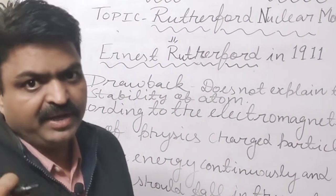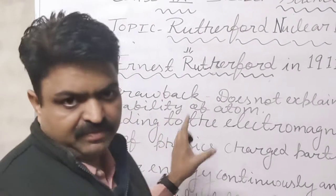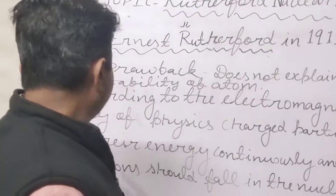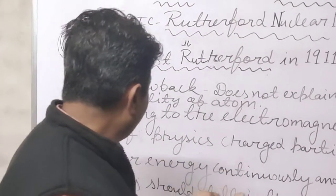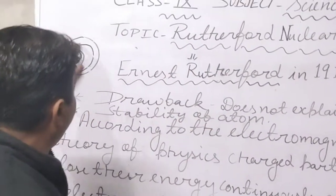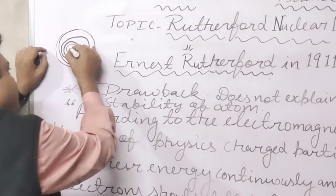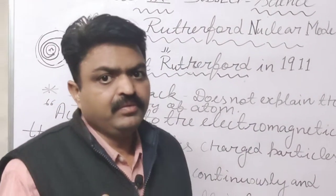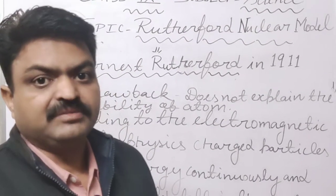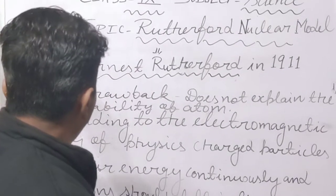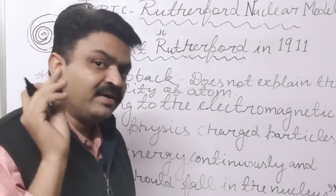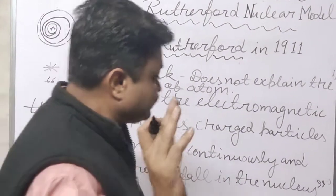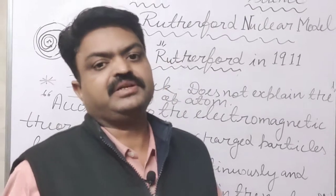Later, the stability was explained by Niels Bohr, and we will discuss the Bohr model after this. According to the electromagnetic theory of physics, charged particles like electrons — negatively charged particles — lose their energy continuously when they move around the nucleus. If they move continuously around the nucleus, they lose their energy, and that loss of energy may cause the electron to fall inside the nucleus or be attracted towards it. This was not explained by Rutherford, and it is the major drawback of the Rutherford model.